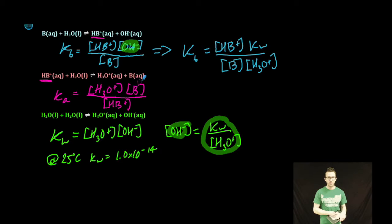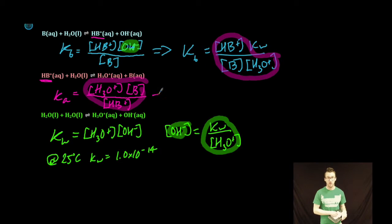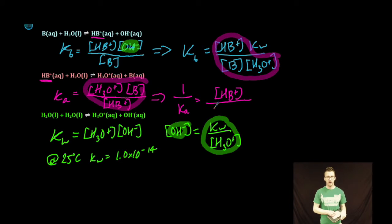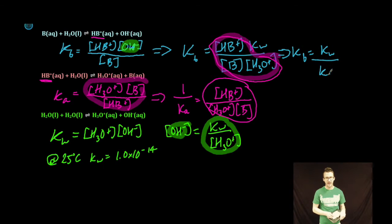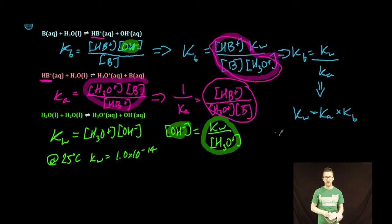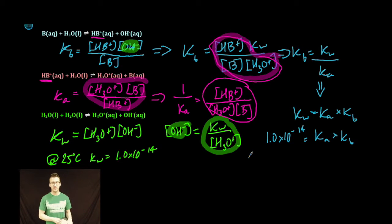Notice that the Ka expression appears inverted within the Kb expression. Specifically, 1 over Ka equals the concentration of the conjugate acid over the concentration of hydronium ion times the concentration of the original base. Substituting this in, Kb equals Kw over Ka — or more commonly as seen on the formula chart, Kw equals Ka times Kb. At 25 degrees Celsius that means 1.0 times 10 to the negative 14 equals Ka times Kb. Taking the negative log of each side gives us 14 equals pKa plus pKb.